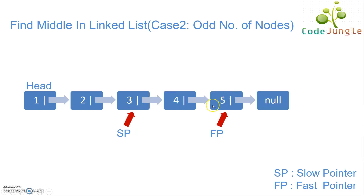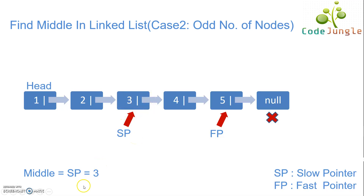In the next iteration we check: fast pointer is not null — that is true. However, fast pointer's next node is null, so this condition fails and we do not increment the pointers. The iteration stops here. The middle node is the node the slow pointer is pointing to, which is node 3. Hence, the middle node of this linked list is node 3.